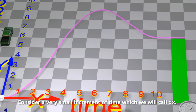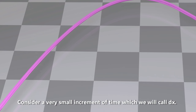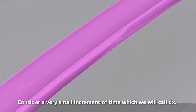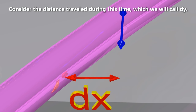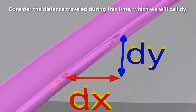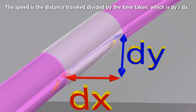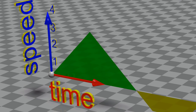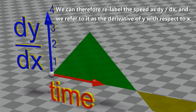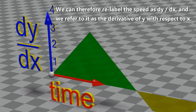Consider a very small increment of time, which we will call dx. Consider the distance traveled during this time, which we will call dy. The speed is dy divided by dx. We can therefore relabel the speed as dy divided by dx, and we refer to it as the derivative of y with respect to x.